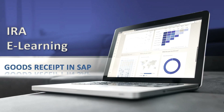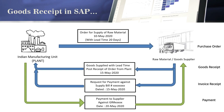Welcome to ERAI Learning. In our earlier video we started our discussion about the P2P cycle, covering the first topic of purchase order processing in SAP. In this part we are going to cover the second step, where the vendor or supplier is supplying the plant with raw material or ordered spares on 15th of May.